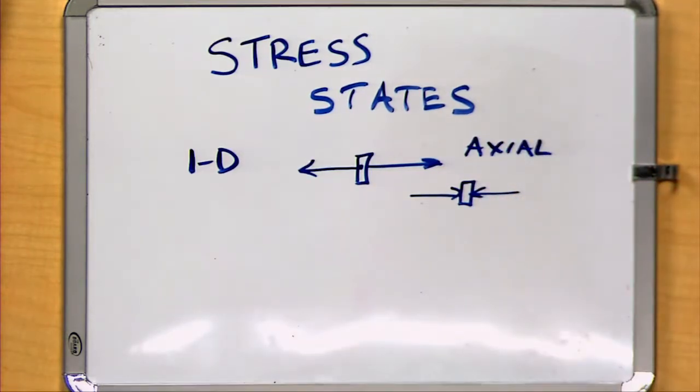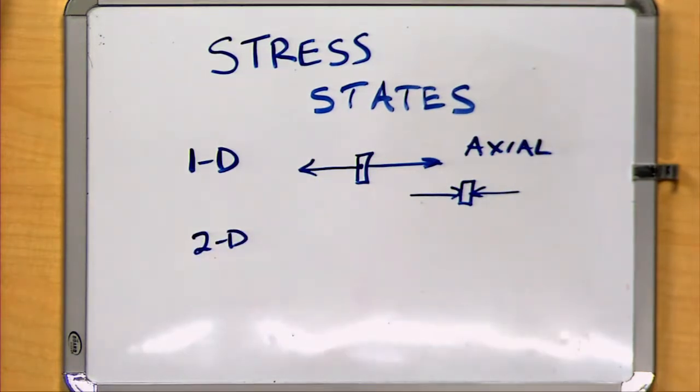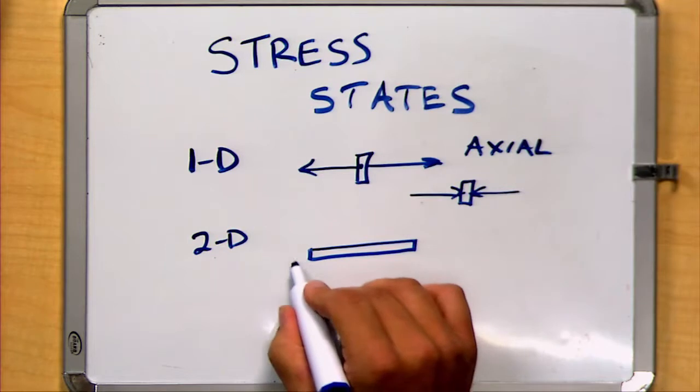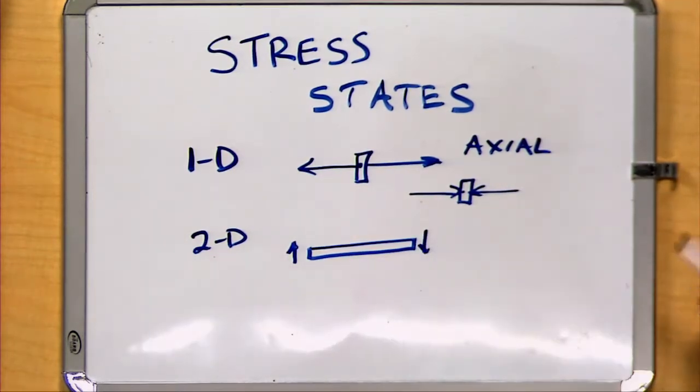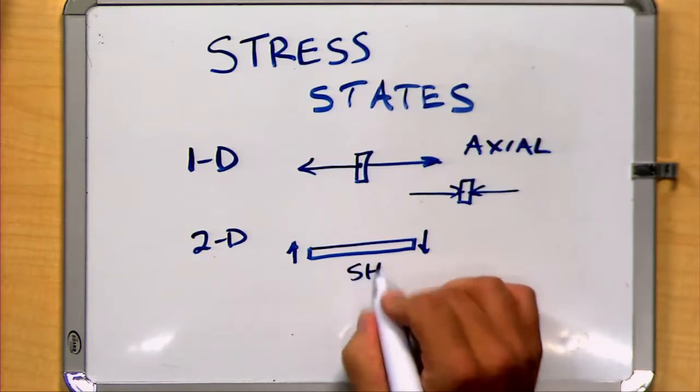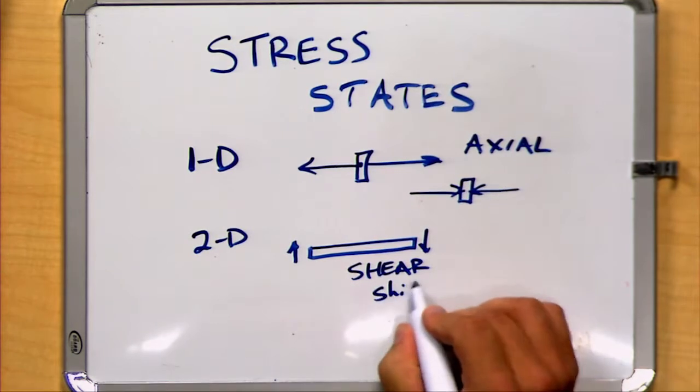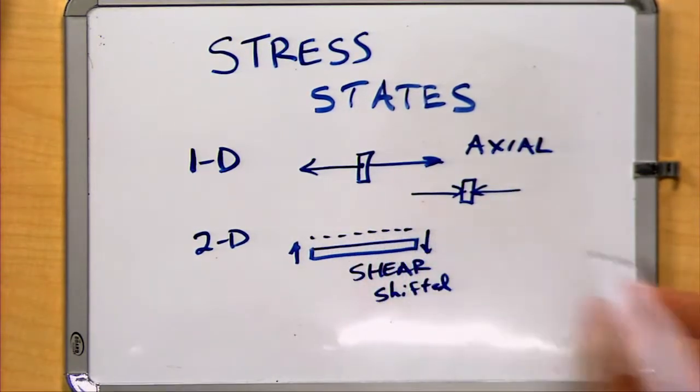We add some possibilities when we move into two dimensions, where we can take two things that would normally be collinear and make them not collinear, and add the possibility of shear. For example, if we push up on one end of the bar and down on the other end of the bar, we end up with shear stress, which is sort of like axial stress but shifted, so it's no longer collinear.